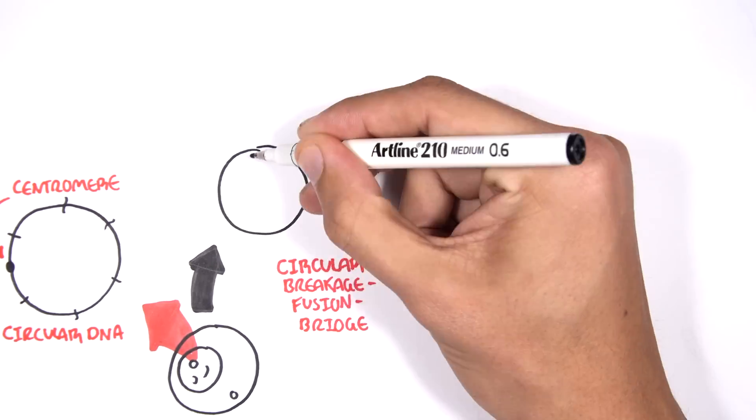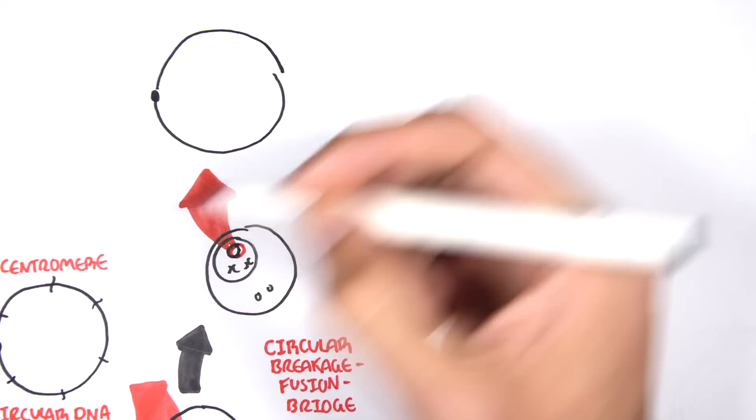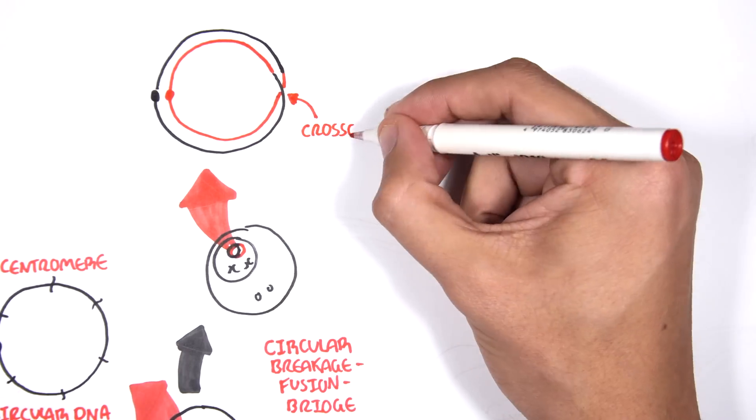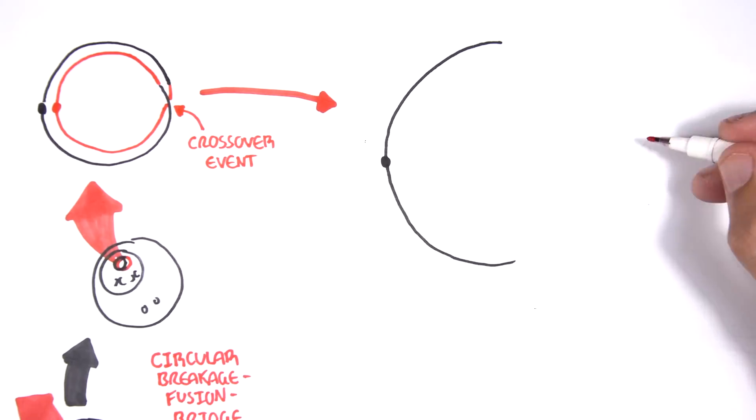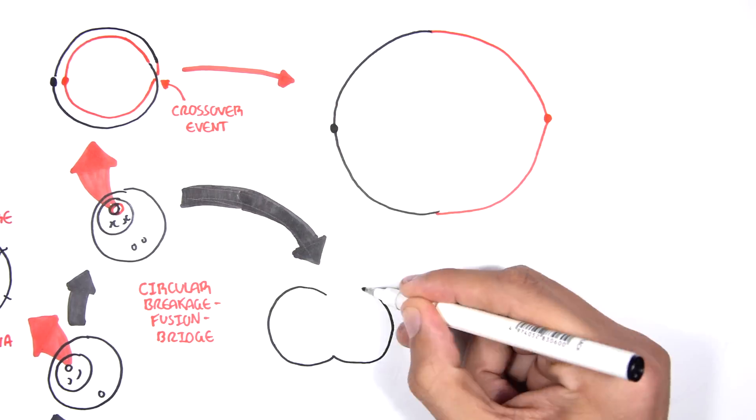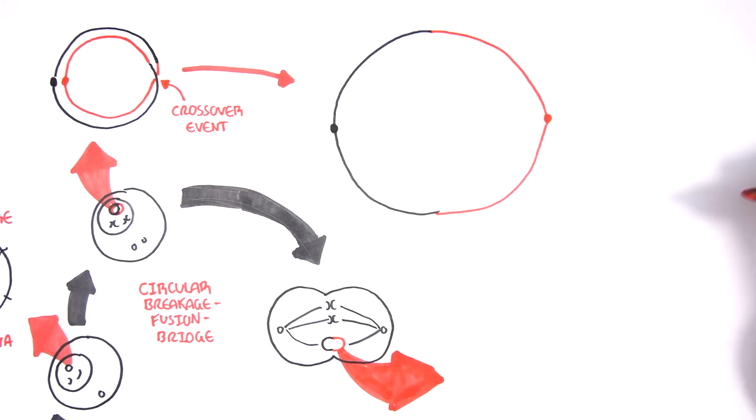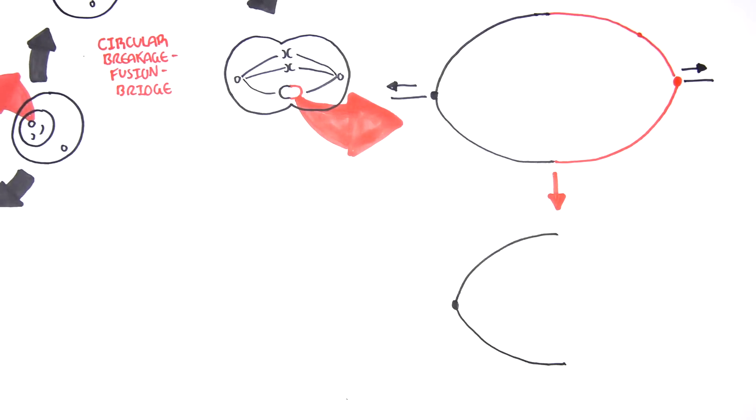At other times, what is known as a cross-over event occurs. This is when each of the identical circular chromosomes breaks in a single place, and they form a double ring. At cell division, this double ring is torn apart unevenly, causing unequal rings to migrate to daughter cells.